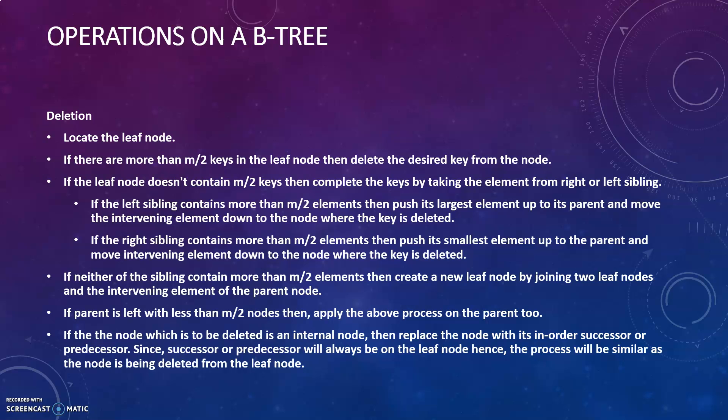If the leaf node doesn't contain M/2 keys, then complete the keys by taking an element from the right or left sibling. If there is no sufficient number of keys and you want to delete the node, you will borrow a key from the left or the right sibling. If the left sibling contains more than the sufficient number of keys, you will push its largest element up to its parent and move the intervening element down to the node. You will push the borrowed key as a parent and the middle element down.